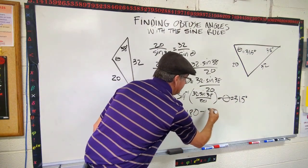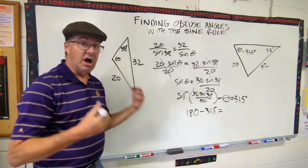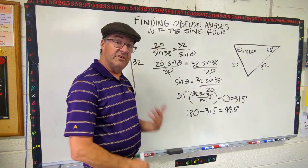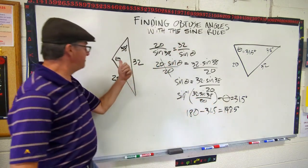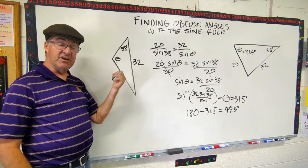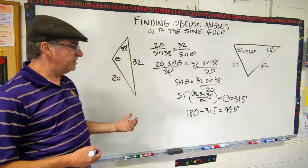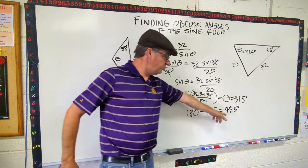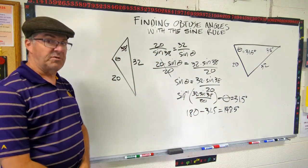So 180 minus 31.5 is going to be your obtuse angle. Alright, so when I do my math on that one, I get 148.5 as my solution for this angle. And now, if I was working out of the book and I needed to check my answer, I'd go in there and I'd see, and this would line up just fine with the answer that they provide in your textbook.